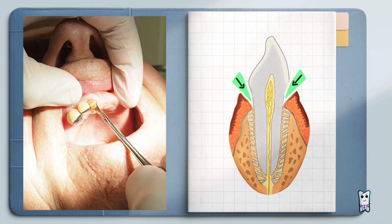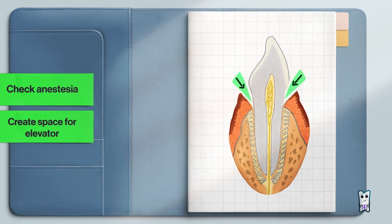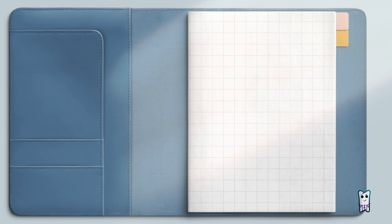Why is syndesmotomy necessary? Let's imagine what happens during a routine extraction. You position the forceps on the tooth, hold it firmly, and begin the luxations. The alveolar bone is a rigid but plastic structure.